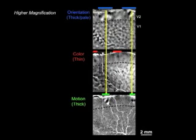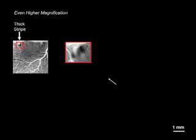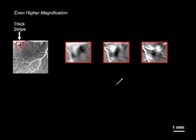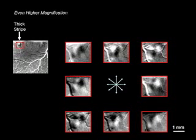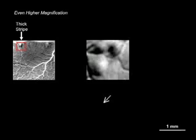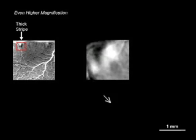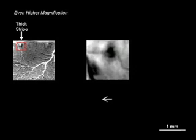In fact, if we zoom in on a single thick stripe, we see that different locations within the thick stripe code for different directions of motion. This direction preference is easily seen in this movie where the arrow indicates the current stimulus motion direction.